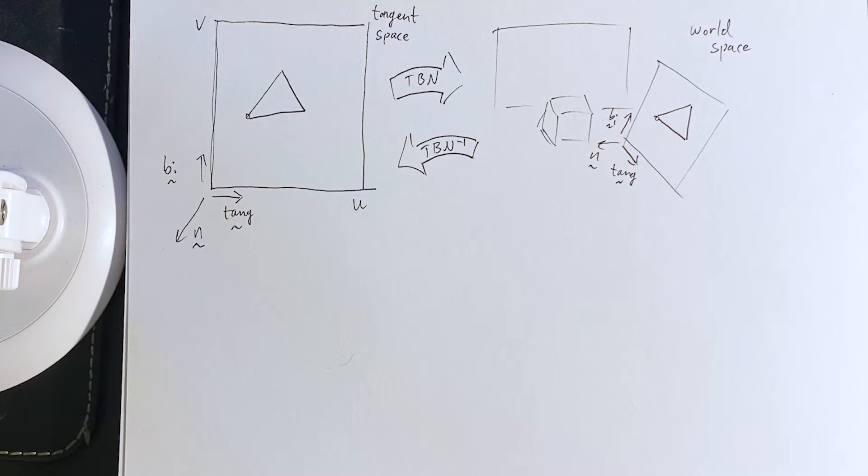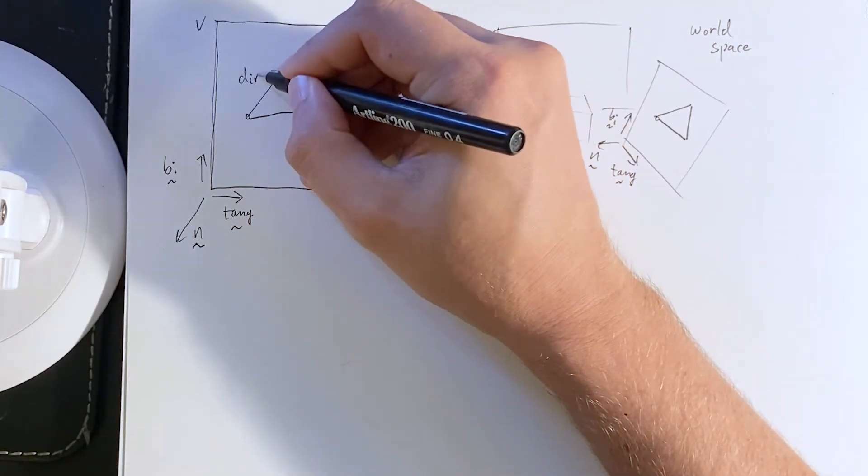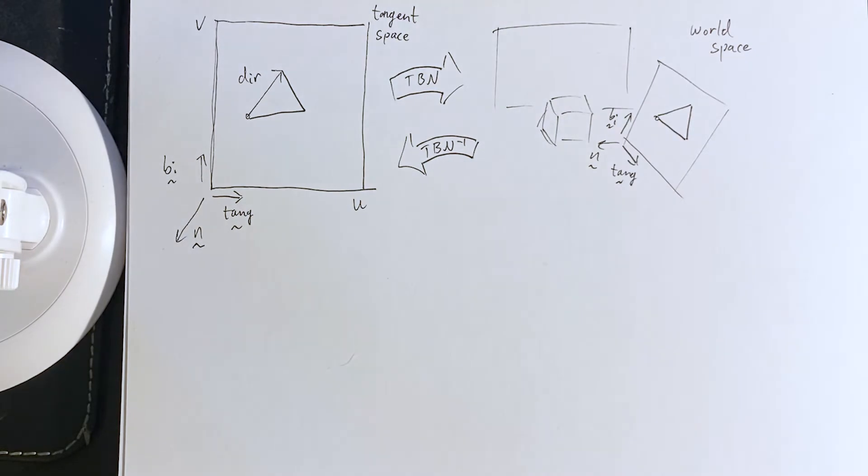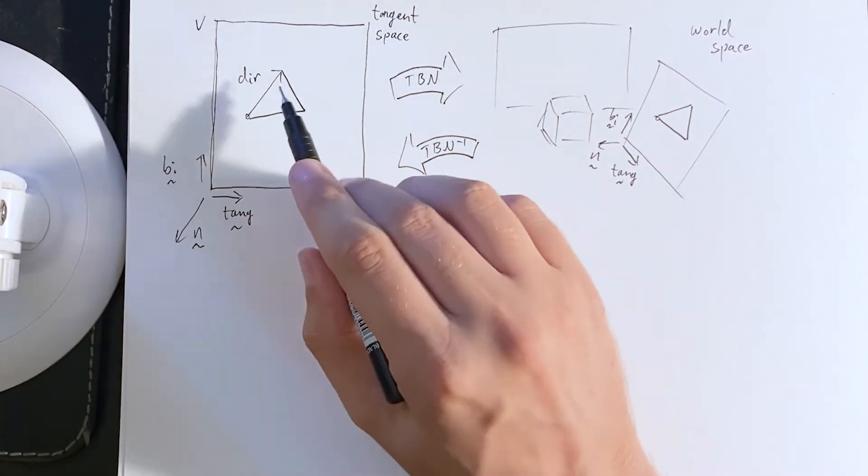Okay. So, what can we do? Well, if we look here, we can pick a direction when we load in models. Our models have vertices, vertices have triangles and things and positions, and each of those have UV coordinates.